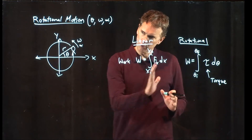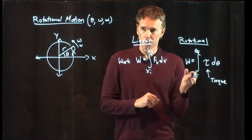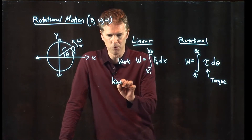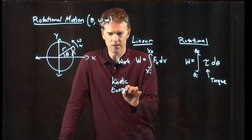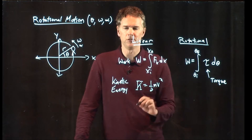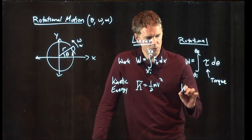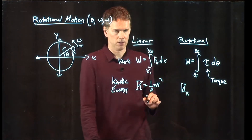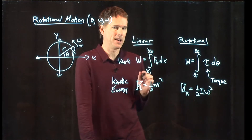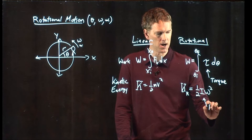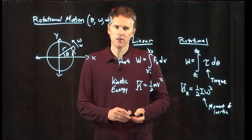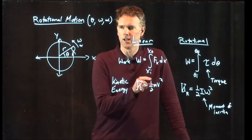If I take a box and put a force on it, it will accelerate. If I take a wheel and put a torque on it, it will angularly accelerate. We also know that moving objects have kinetic energy K = one-half mv-squared. For rotating objects, we have rotational kinetic energy: one-half I omega-squared, introducing yet another term I — the moment of inertia.